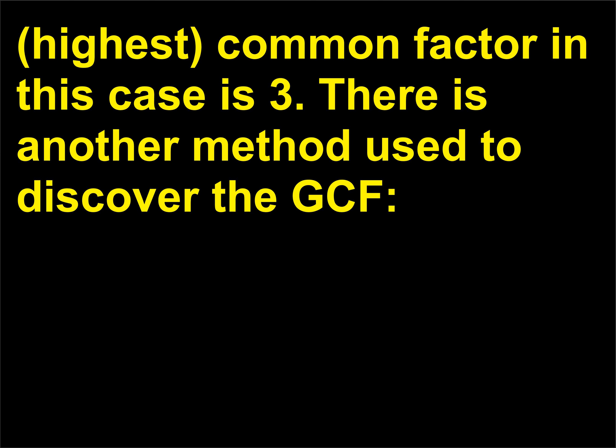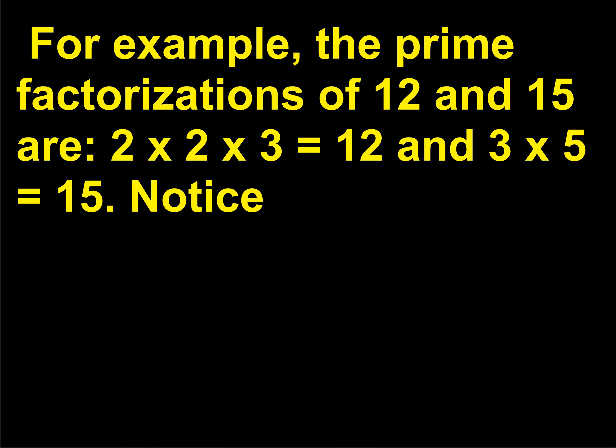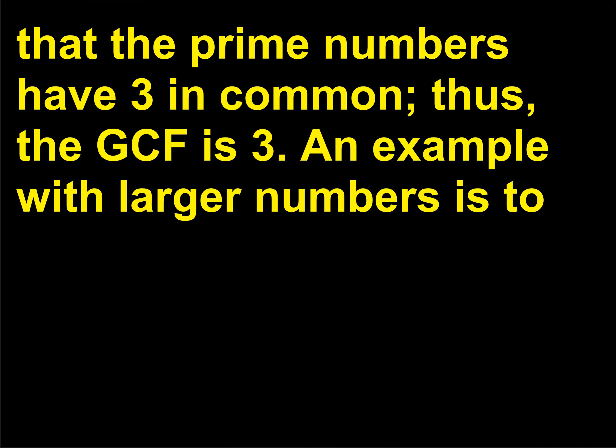There is another method used to discover the GCF: listing the numbers' prime factors, then multiplying those numbers. For example, the prime factorizations of 12 and 15 are 2×2×3=12 and 3×5=15. Notice that the prime numbers have 3 in common; thus, the GCF is 3.